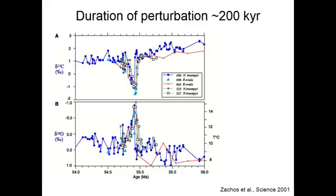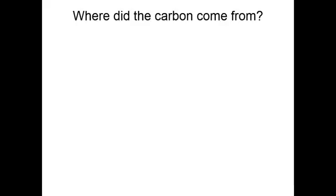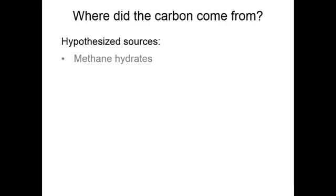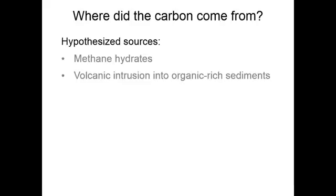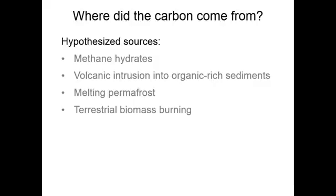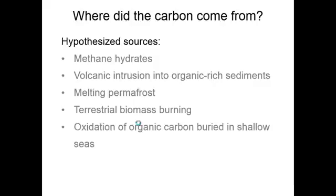But where did the carbon come from in the PETM? There are many hypotheses. These include methane hydrates from deep sea sediments, volcanic intrusion into organic-rich sediments releasing thermogenic methane, melting permafrost near the poles, massive wildfires leading to terrestrial biomass burning, or the drying of shallow seas and subsequent oxidation of carbon in organic-rich sediments. These sources are not mutually exclusive — release from one could trigger positive feedbacks leading to release from another reservoir.